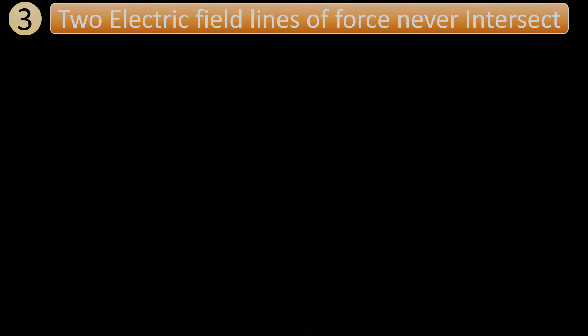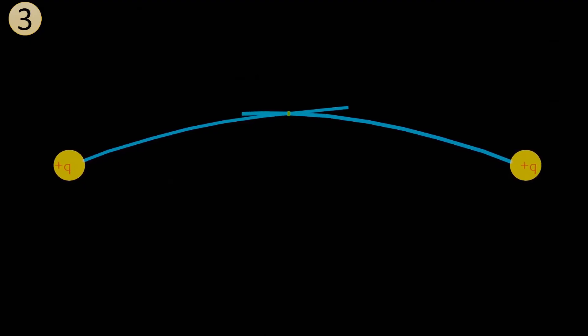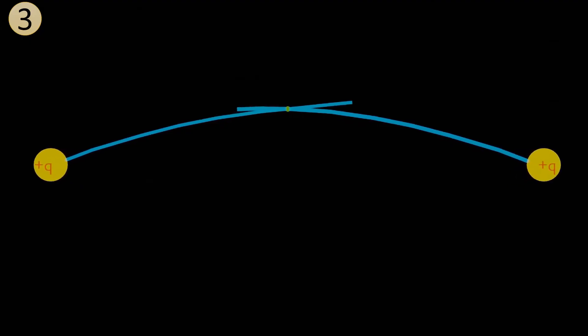Now let's talk about the third point. Two electric field lines of force never intersect. To understand this fact, let's assume that we have two same positive charges. Both charges will have a radial outward electric field line. But we can see that the lines are crossing each other. At this point of intersection, two tangents can be drawn.